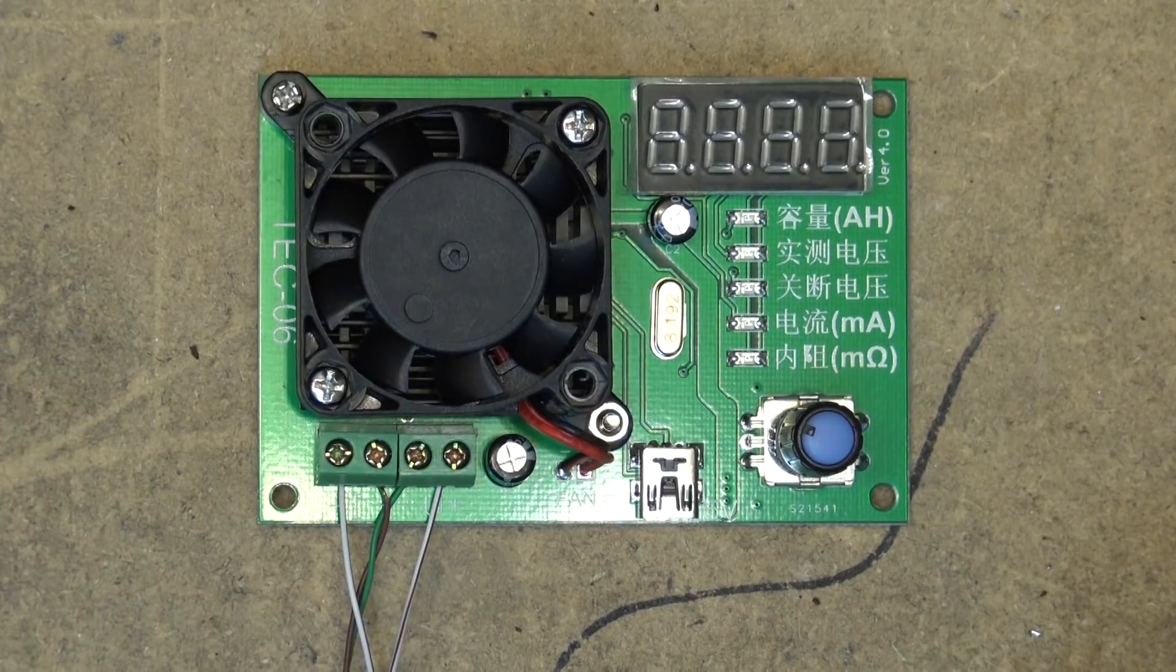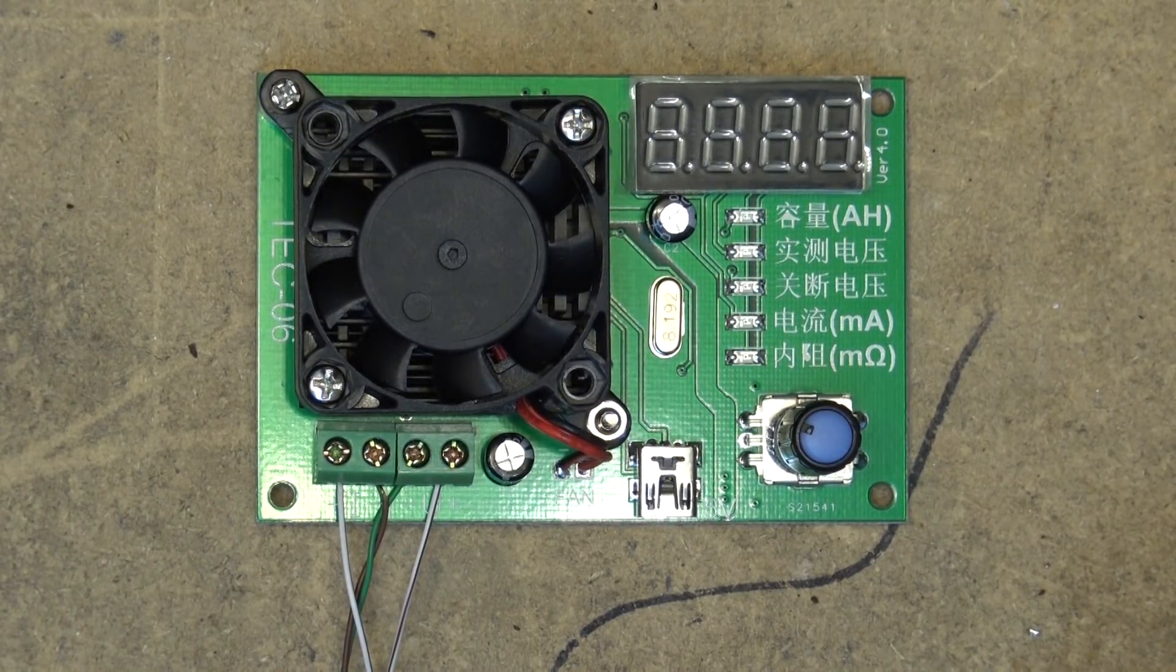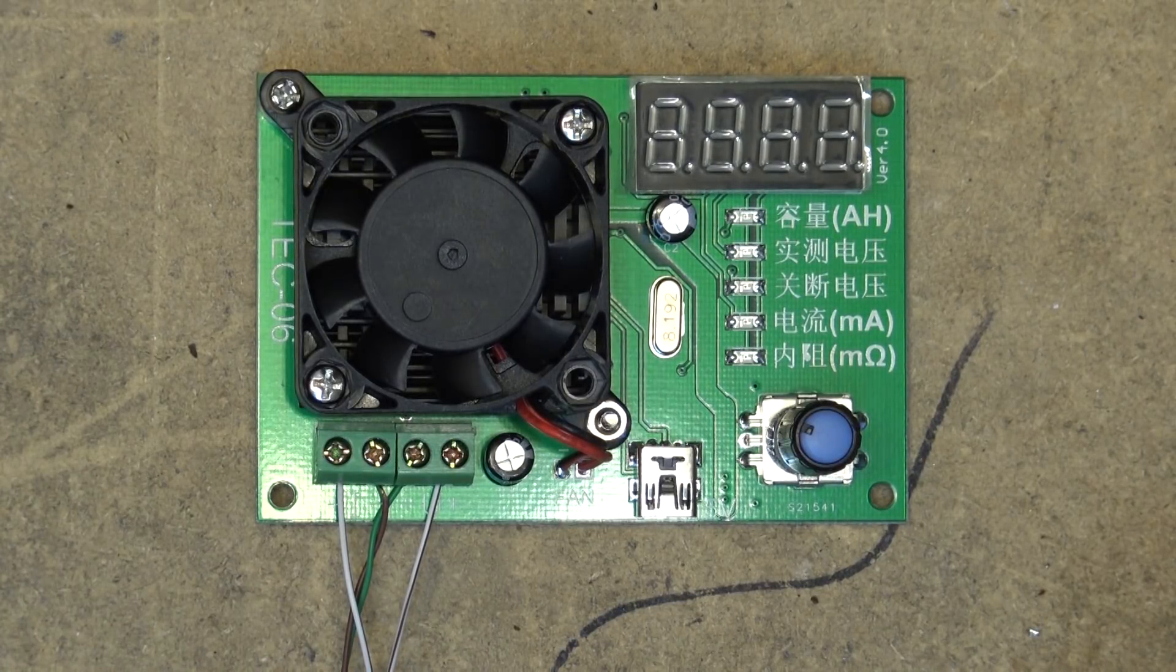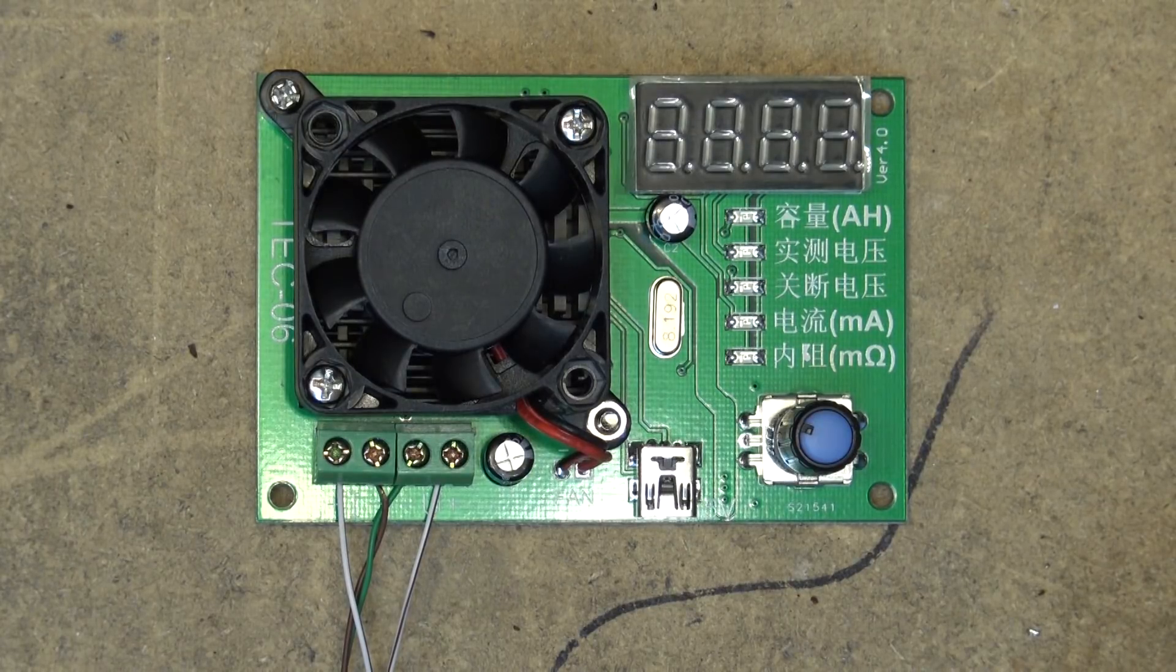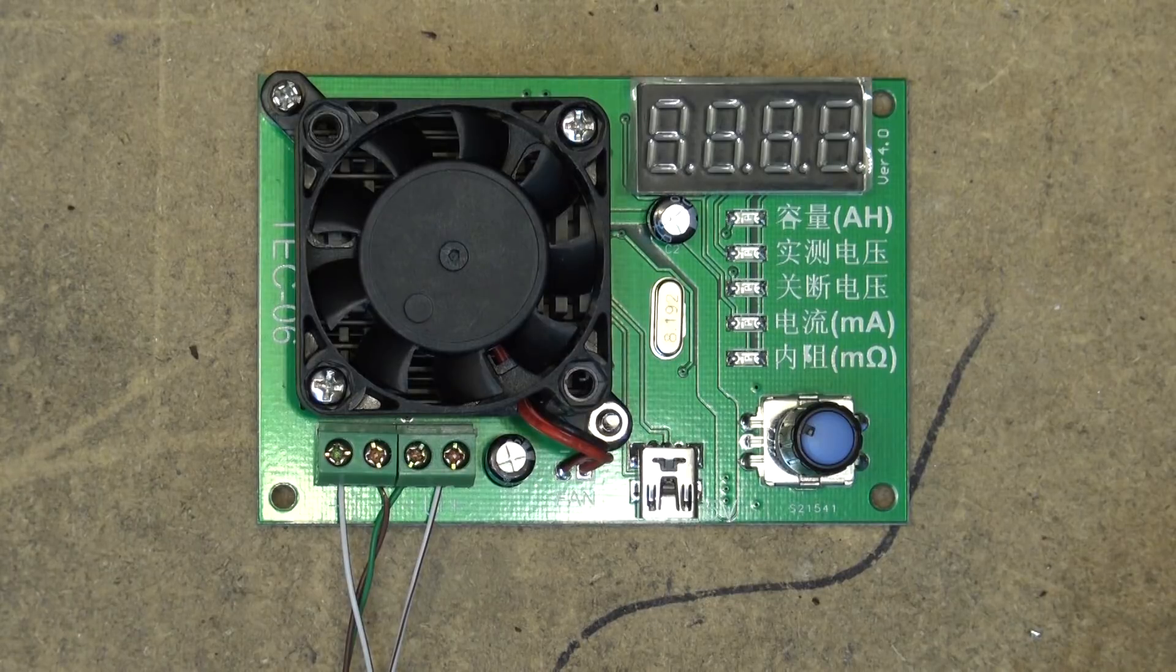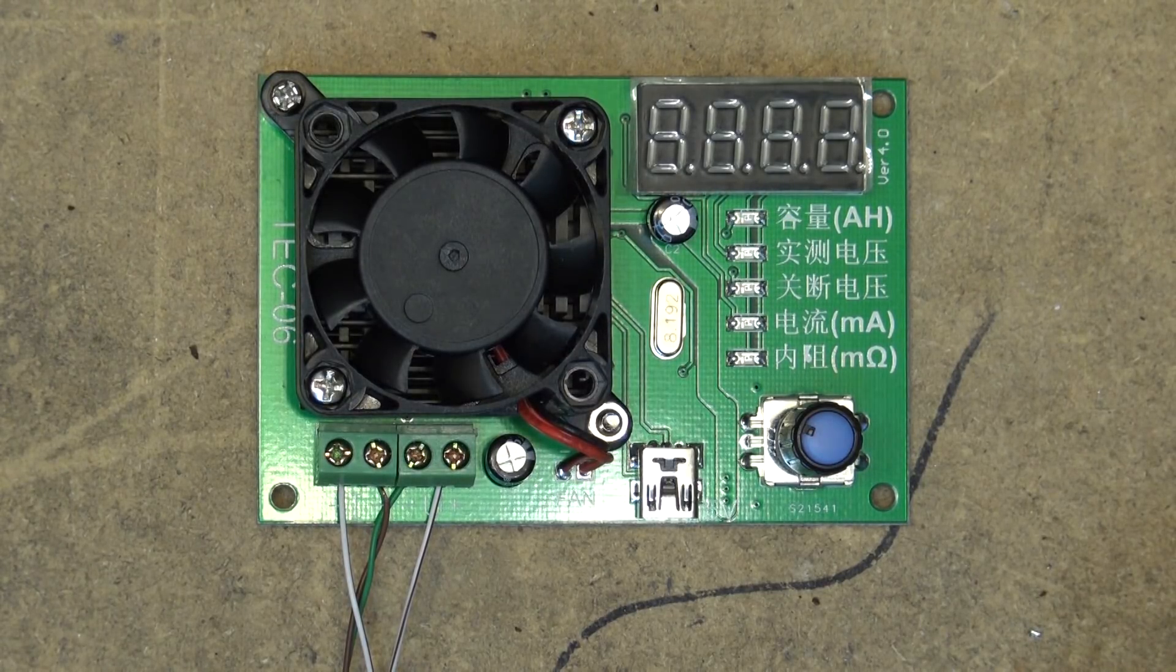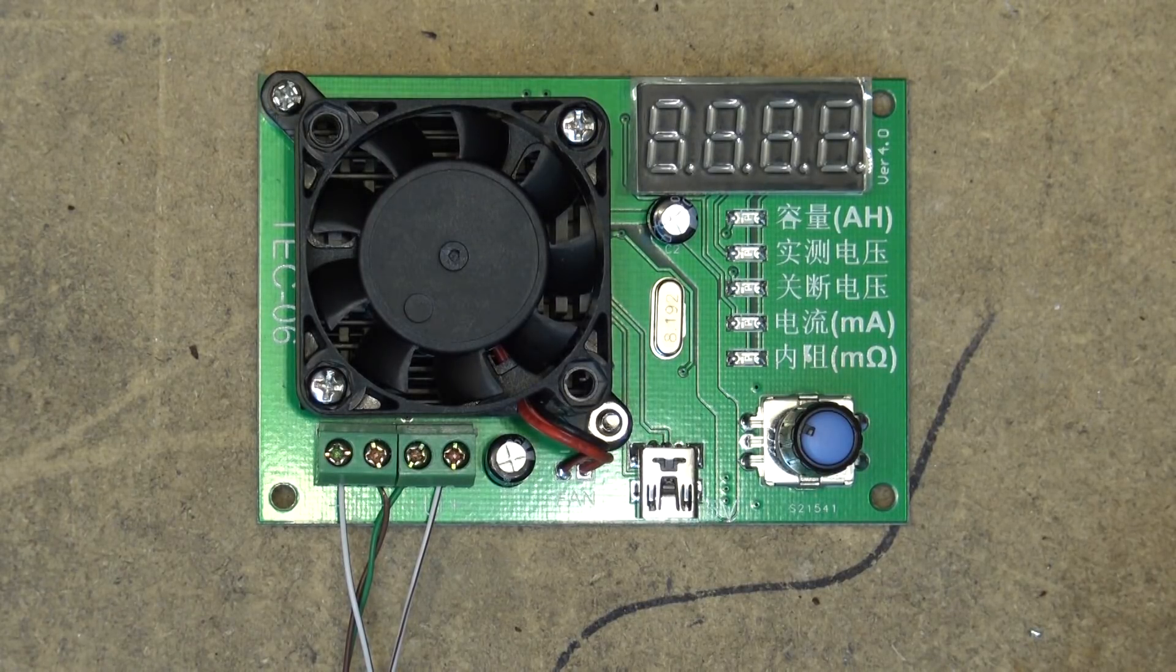It's a linear electronic load, it's not a PWM load, and the TEC-06 will automatically calculate the product of discharge current and time and detect battery capacity. It can also be used as an electronic load to verify a battery or power supply output capacity. It has a maximum current of three and a half amps and a maximum power dissipation of 16 watts, and we can connect the computer to this.